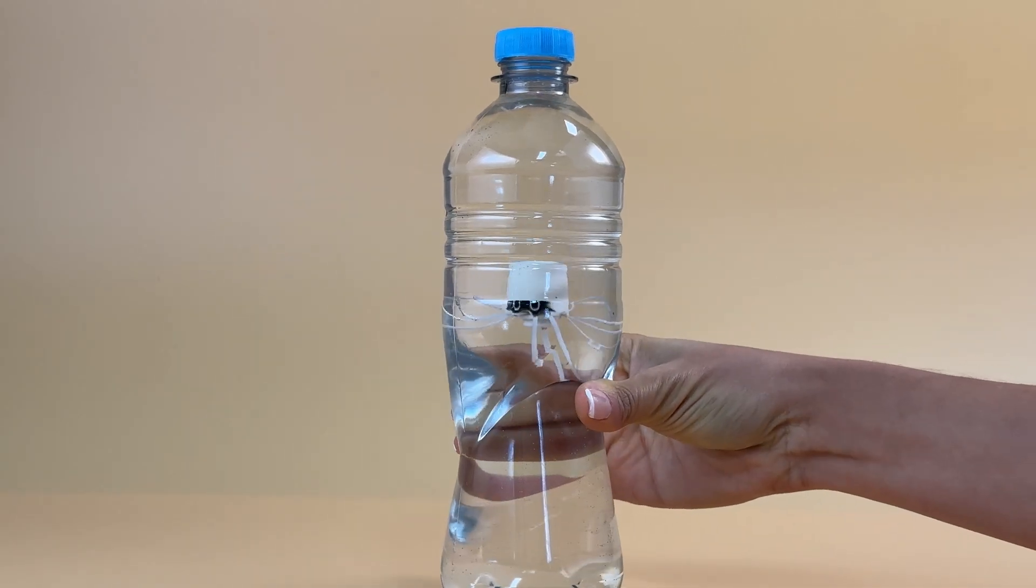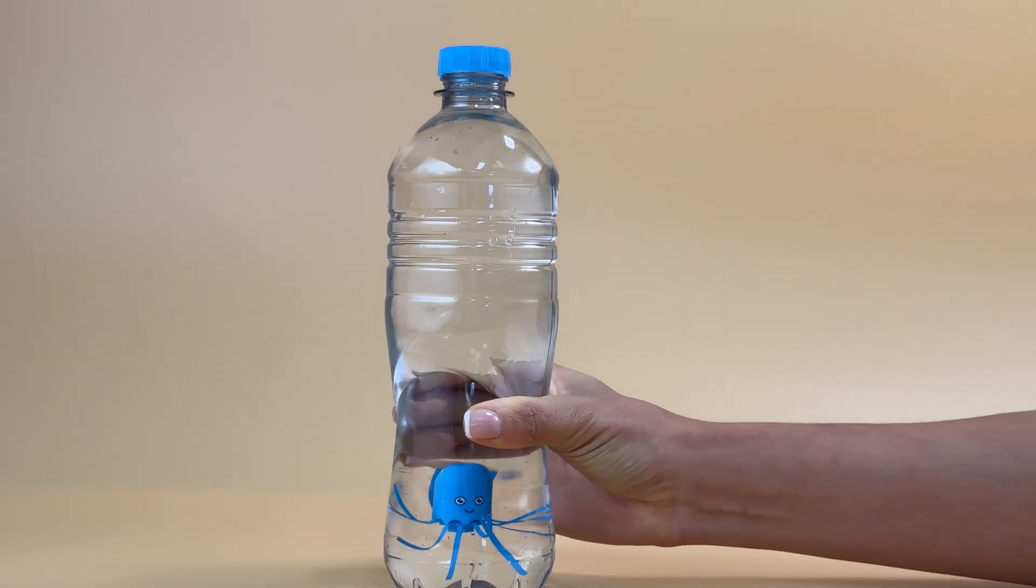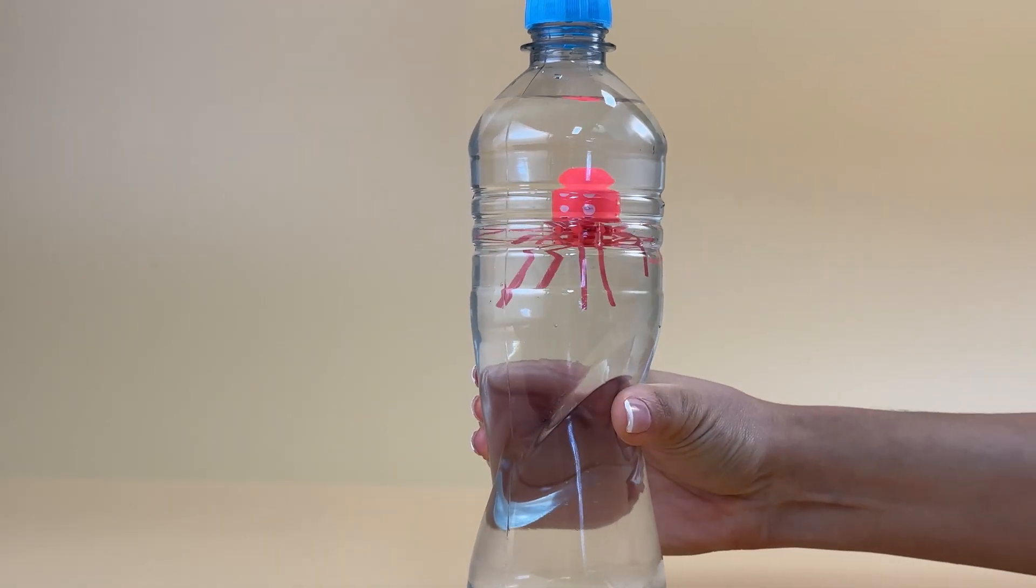Test the diver by squeezing the bottle firmly. You should see the diver sink as you apply pressure. Release the pressure and the diver will float back to the top.